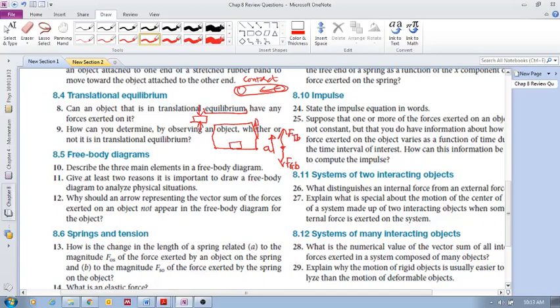Number 11, give at least two reasons it is important to draw a free body diagram to analyze physical situations. Well, this I'll just even read straight from the answers. It allows us, number one, to separate this object from its surrounding, from all the other objects that it's interacting with.